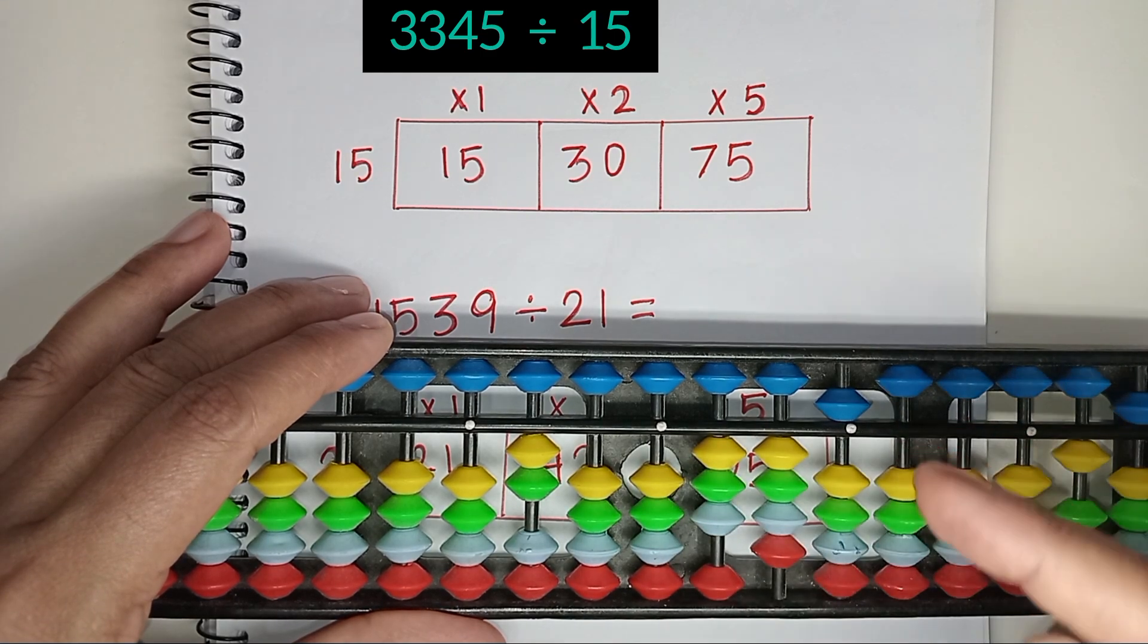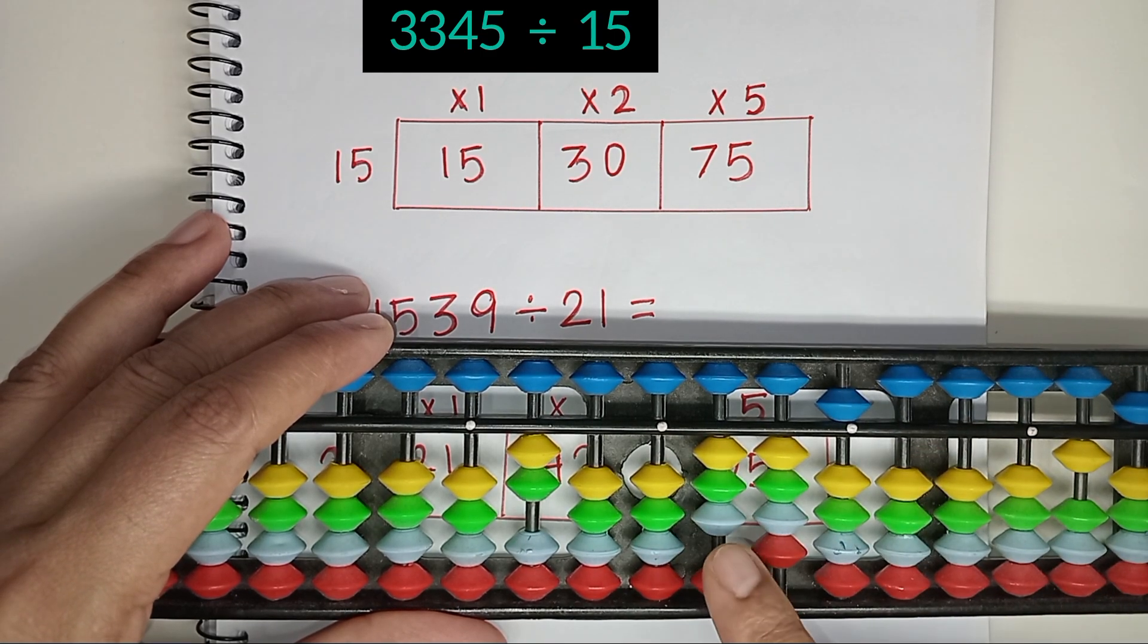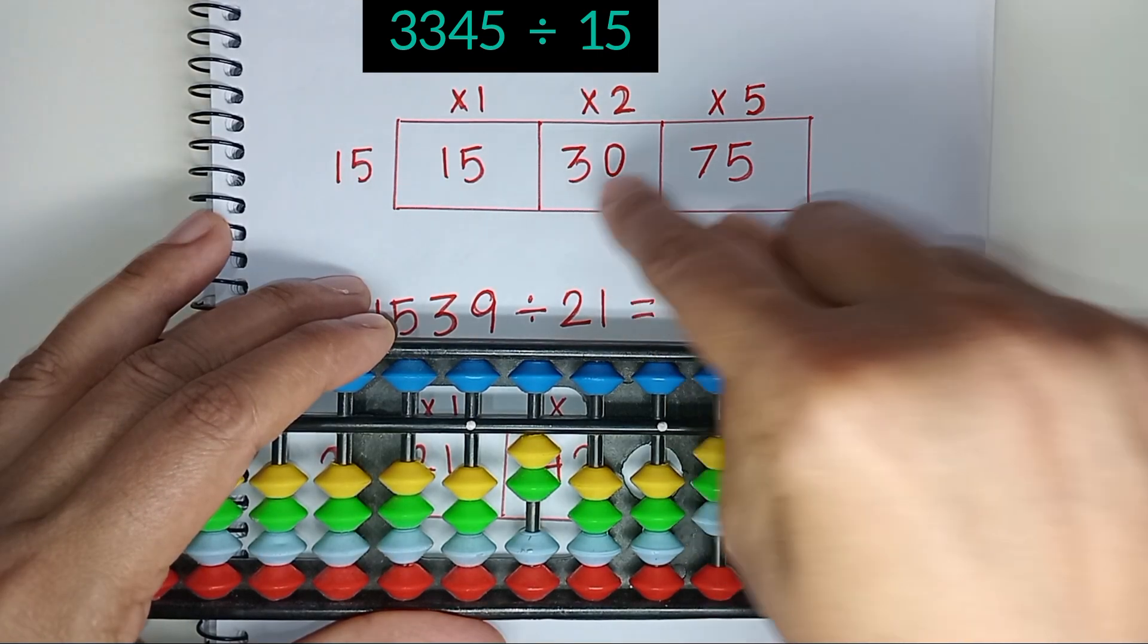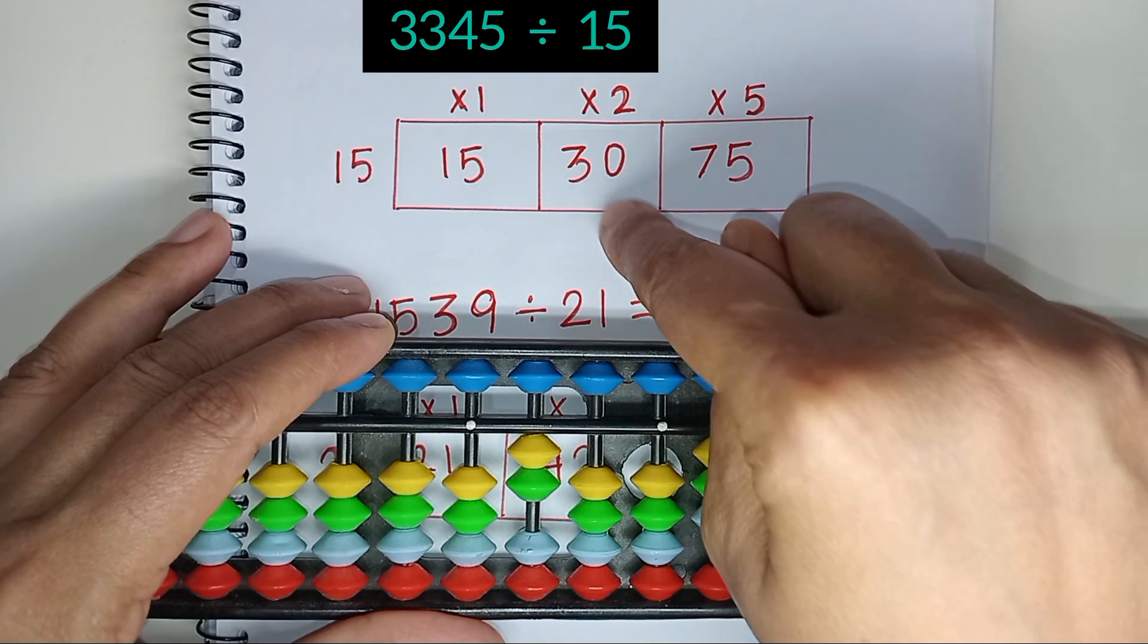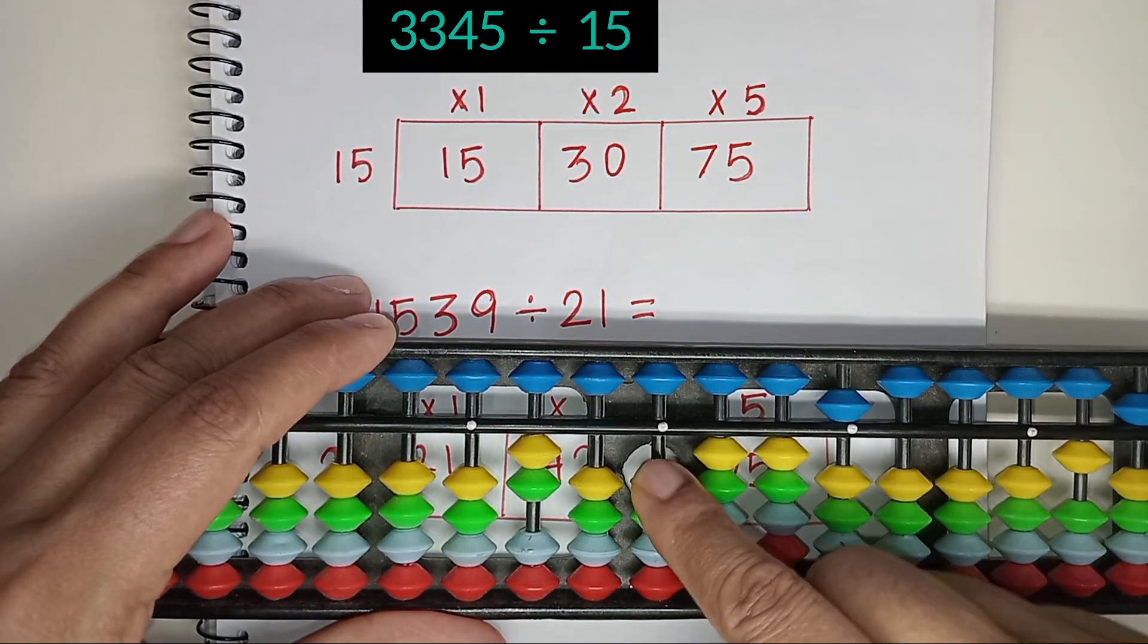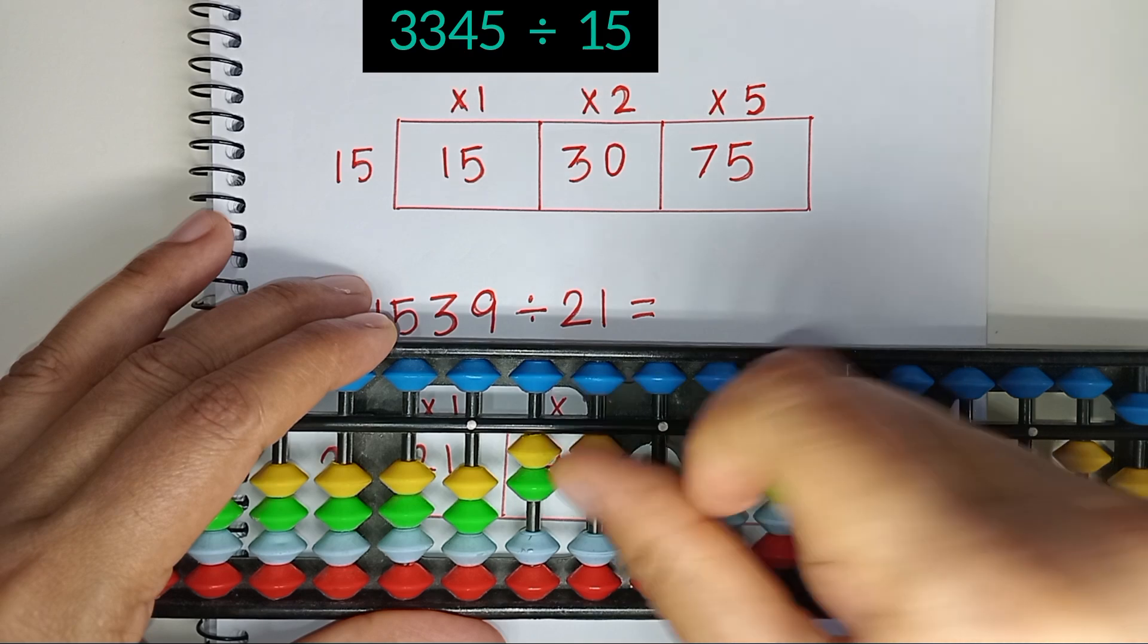So for the next part, we will start from that place. Consider 2 rods: 3 and 4, which is 34. 34 falls between 30 and 75. We will consider the smaller one. 15 times 2 is 30. Jump 1 rod and place the answer here. 15 times 2 is 30.